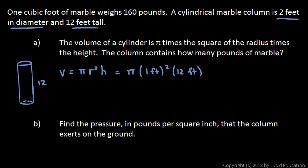You can see here we have feet right here and feet squared right there. So we're going to end up with cubic feet. This is pi times 1 squared, which is just 1. Pi times 12 comes out to 37.7 cubic feet.